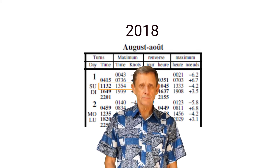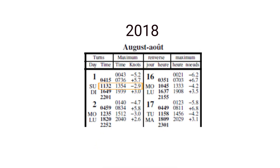The next two columns give you a time and maximum speed for the current. After the turn at 12:32 Daylight Savings Time, there will be a maximum current of 2.9 knots at 14:54 Daylight Savings Time. That's not very much, but at other times there can be maximum currents of 7, 8, or 9 knots. If the currents will be very strong, they will build up very fast, and on those days you need to transit a pass very close to the time of the turn. You won't make it through going against the current, and it can be very dangerous to even try to go with the current.